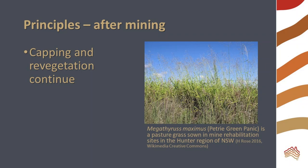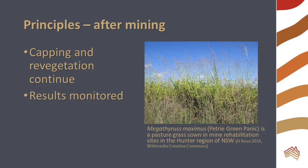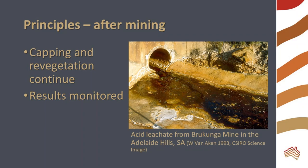The land may be used for pasture, recreation, or habitat. The result of rehabilitation is monitored to ensure that the desired plants are growing and that there is no contaminated drainage. If problems occur, they must be fixed before the land is returned to the council or other owners.